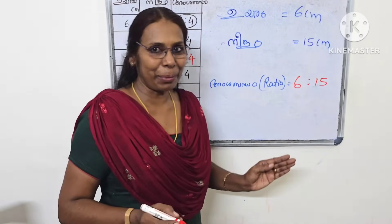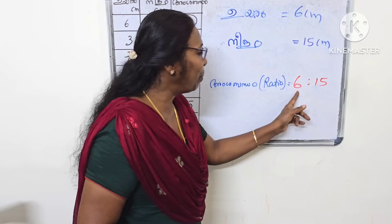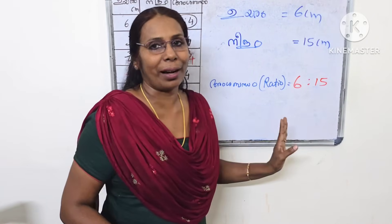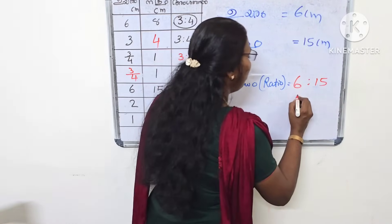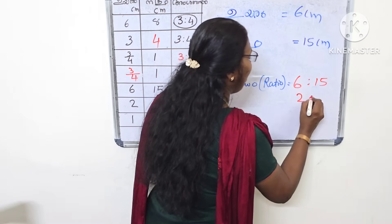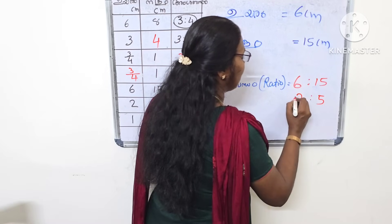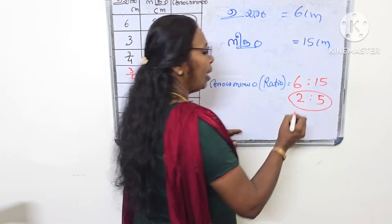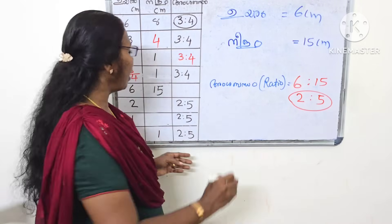Let's cut the maximum. 2 is to 5cm. 3 is to 5cm. How do you say? 1 is to 5cm.